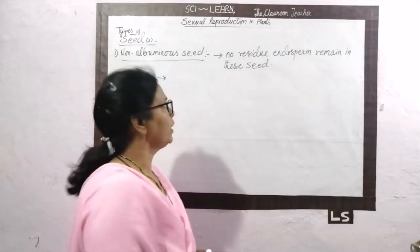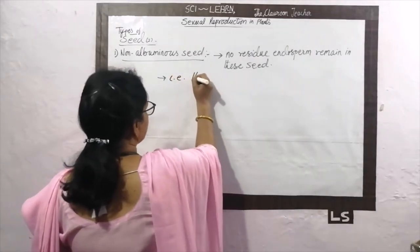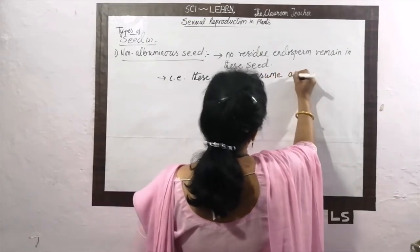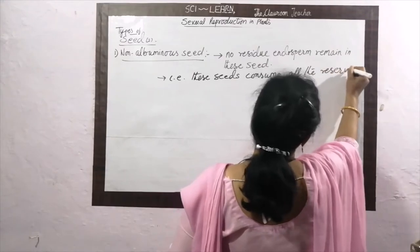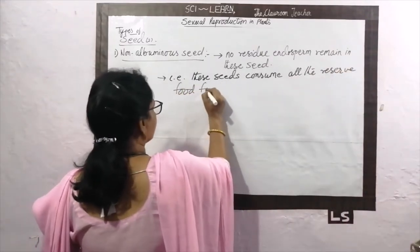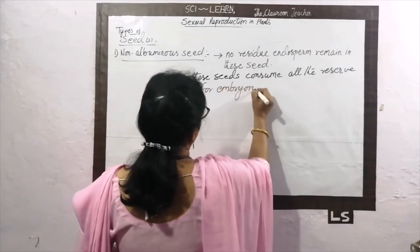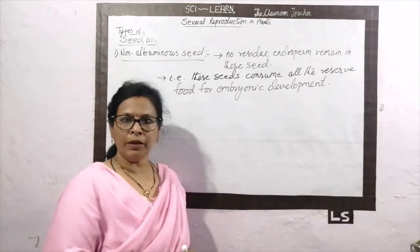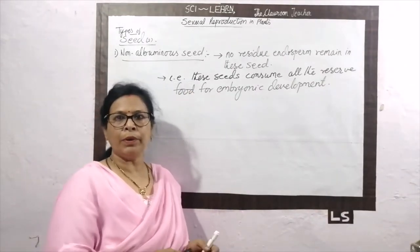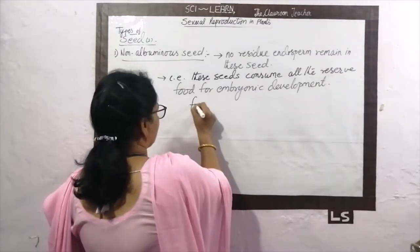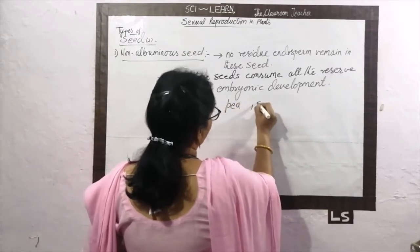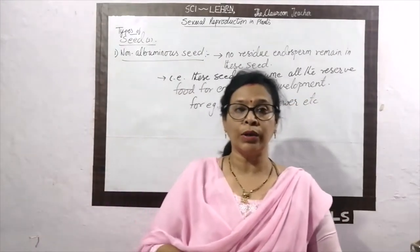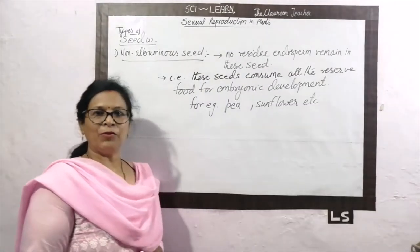These seeds consume all the reserved food for embryonic development — no food remains, so they are called non-albuminous seeds. Examples of non-albuminous seeds are pea, sunflower, groundnut; all the oily seeds are non-albuminous. The second type of seed is the albuminous seed.